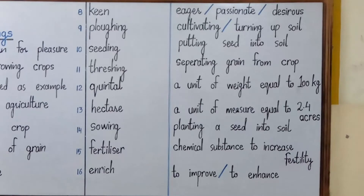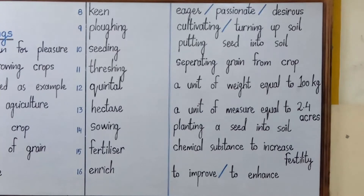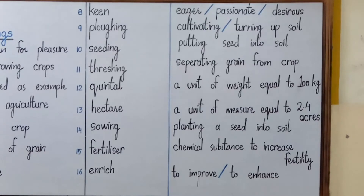Number nine is 'plowing', which means cultivating or, in simple words, turning up soil. Farmers turn up the soil before seeding — the soil is turned up and down to make it favorable before seeding. So that activity is called plowing.